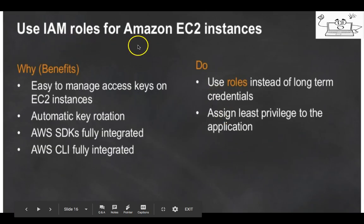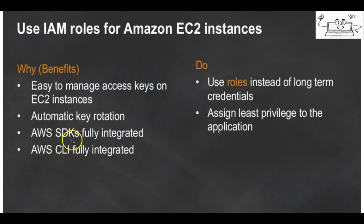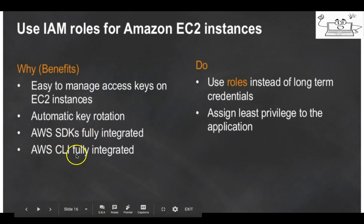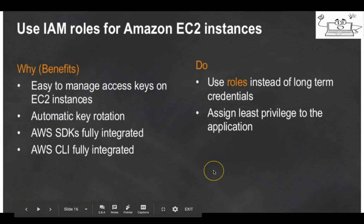You should also use IAM roles for Amazon EC2 instances. The benefits include managing access keys on EC2 instances, automatic key rotation, and full integration with the AWS SDK and AWS CLI. In this case, you create a role instead of using long-term credentials and assign least privilege permissions to applications.